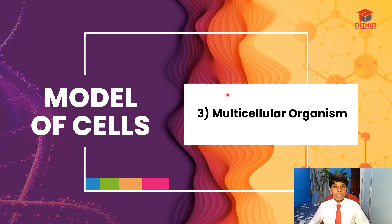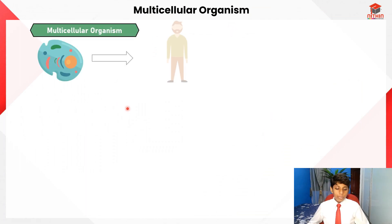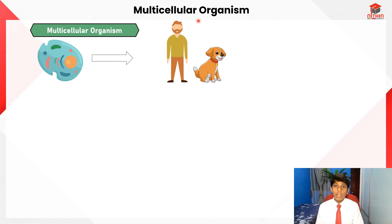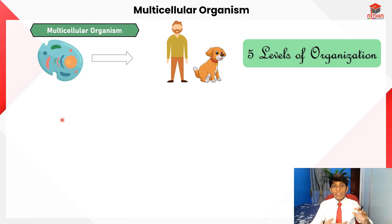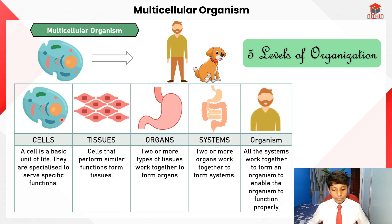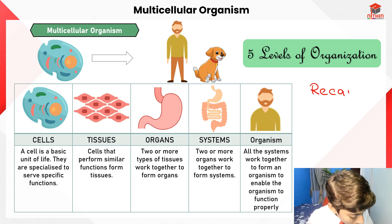For segment three, I'll go through multicellular organisms and the five levels of organization. This shows how a cell goes from just a single cell to something really large like a human or a dog. These are the five levels where a cell progresses from an ordinary cell to a complex organism. This is also a recap from primary school.